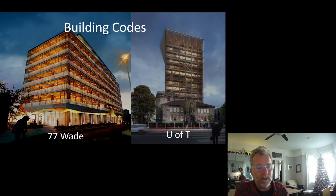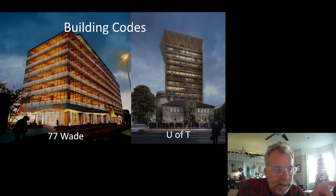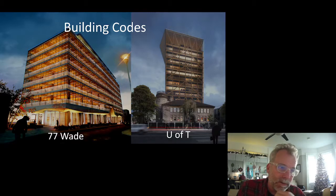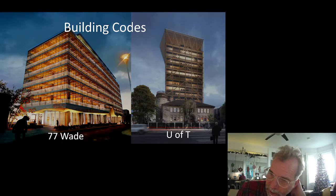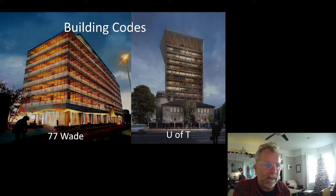So what about building codes? Here are two projects my office is working on right now: 77 Wade and the academic tower at U of T. 77 Wade is eight stories, about a hundred thousand square feet, largely exposed mass timber. What the building code allows us to do is six stories in a much smaller area. But Wade has been approved for construction — the alternative solution has been approved because they were able to quantitatively do a risk analysis demonstrating this was as safe as a comparable concrete building.